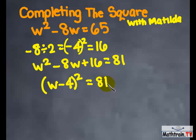Then you take the square root of both sides. You get w minus 4 equals positive or negative 9. Then you just solve for w.